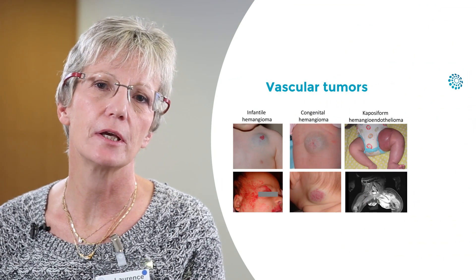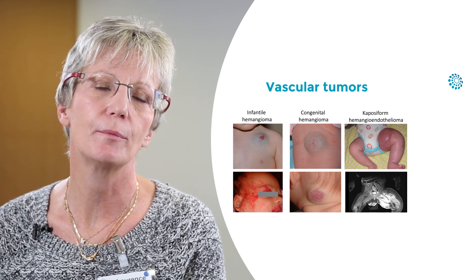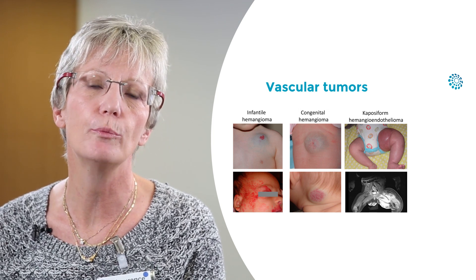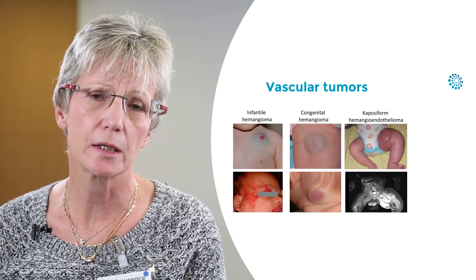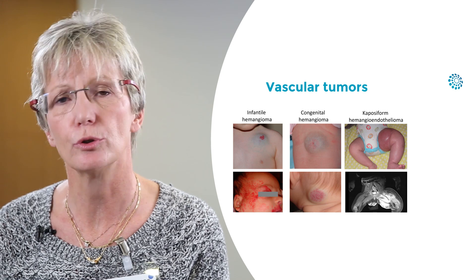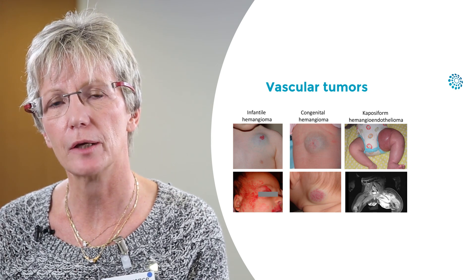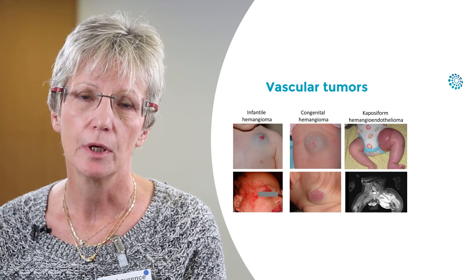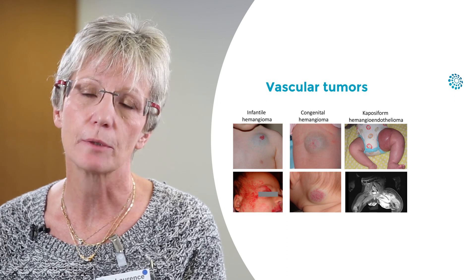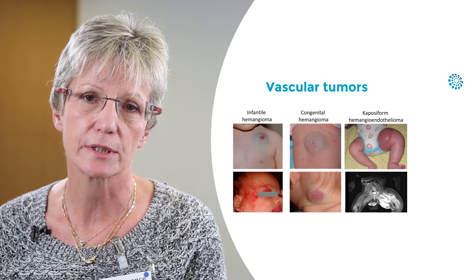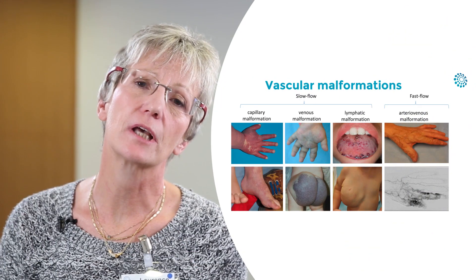The biological classification divides vascular anomalies into two major groups. On one side, the vascular tumors, with infantile hemangioma being the most common, but there are other sometimes more aggressive lesions.